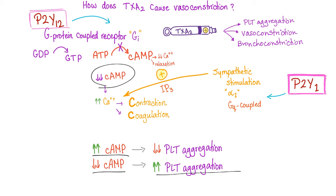On the other hand, the higher the cyclic AMP, the lower the platelet aggregation. When they go low, we go high. P2Y1 is GQ coupled. P2Y12 is GI coupled.